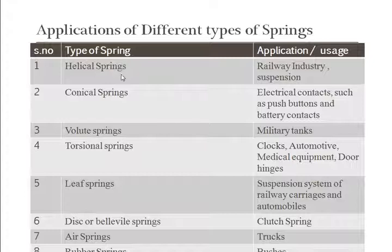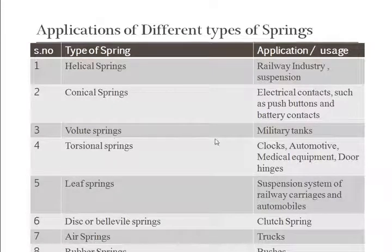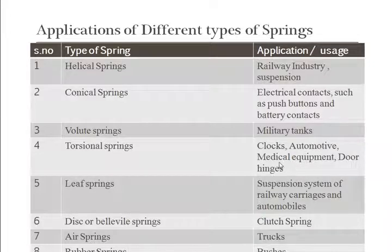The main types of springs are: helical springs, which are generally used in the railway industry and suspension systems in different vehicles; conical springs, used in electrical contacts such as push buttons and battery contacts like in TV remotes; volute springs, used in military tanks; and torsional springs, used in clocks, automotive devices, medical equipment, and door hinges.